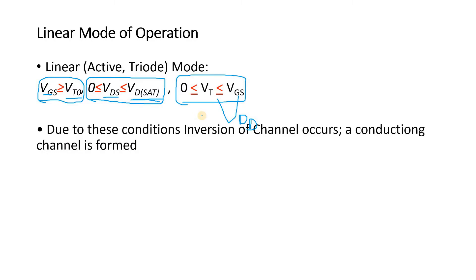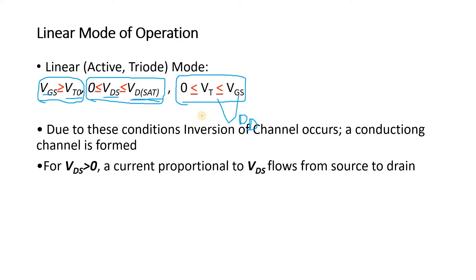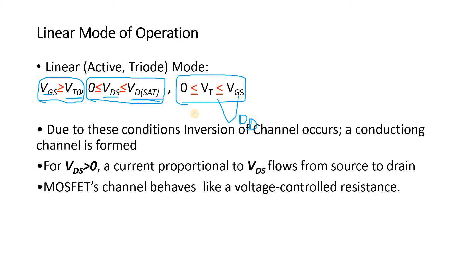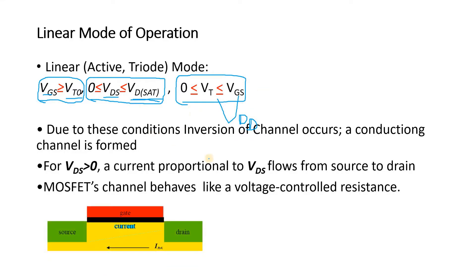When your device is in the linear region, inversion of channel occurs and a connecting channel is being formed. For a VDS greater than zero, a current proportional to VDS flows from the source to the drain. The MOSFET channel behaves like a voltage-controlled resistance. Here we have a MOSFET with certain potential applied on the gate, and because of that, the channel is being created.